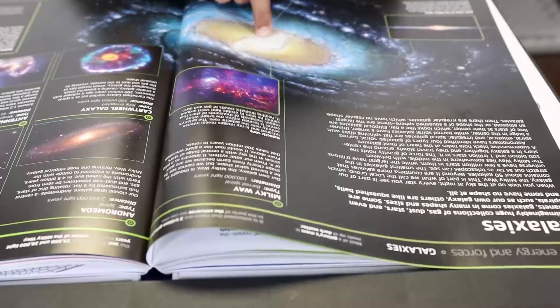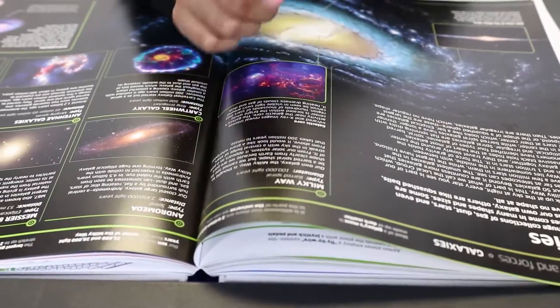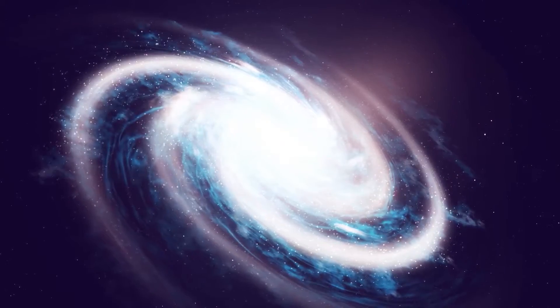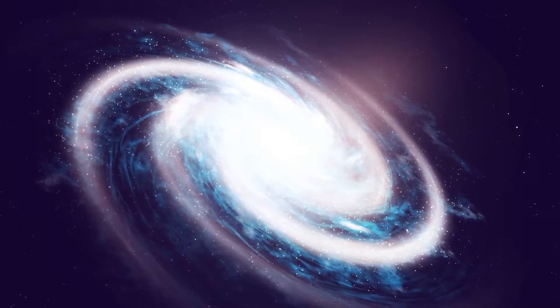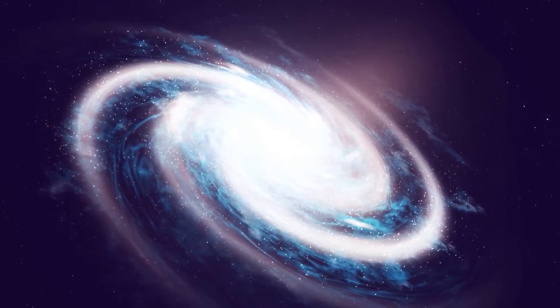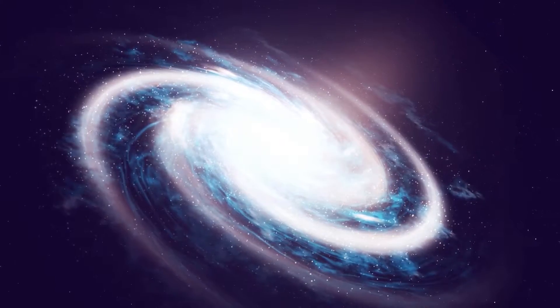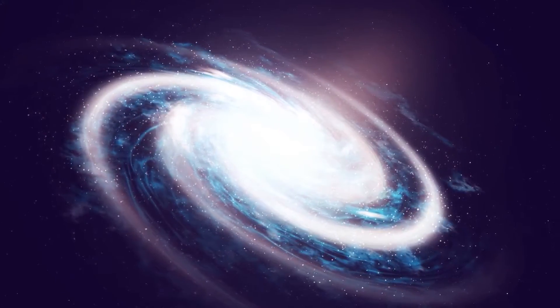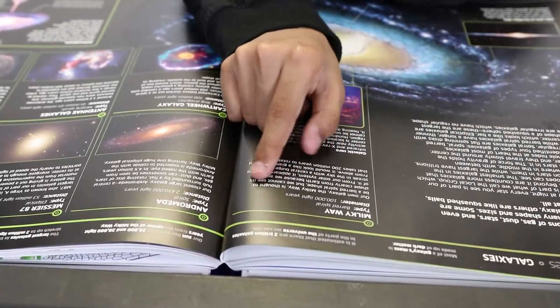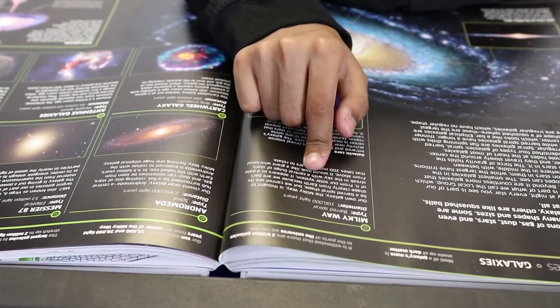This galaxy is our Milky Way and it's a diameter of about 100,000 light years. It's a type called barred spiral. Our own galaxy the Milky Way is thought to be a barred spiral shape.